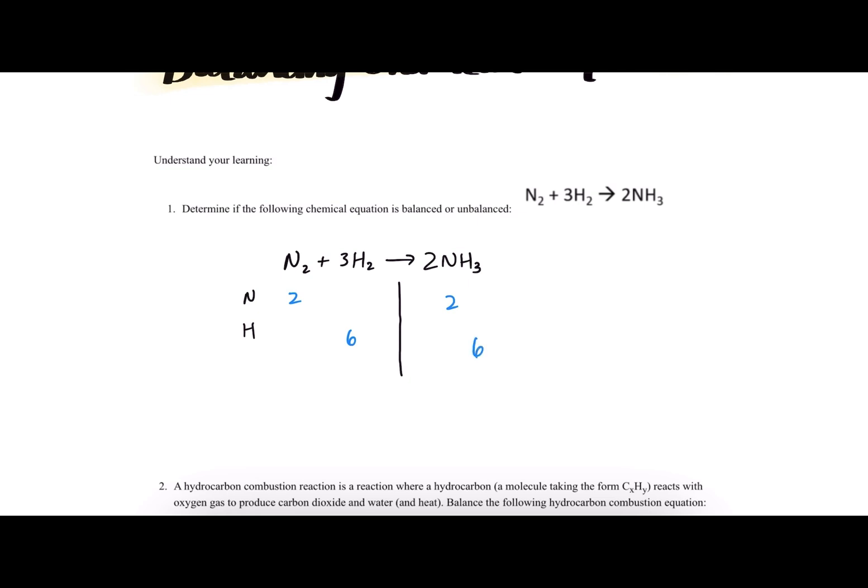Let's check across. We see that two is equivalent to two, so that is balanced, and six is equivalent to six, so that is balanced. So this chemical equation is in fact balanced. And that is the answer to number one.